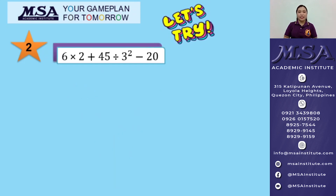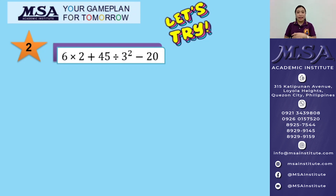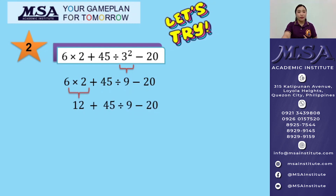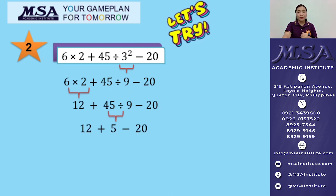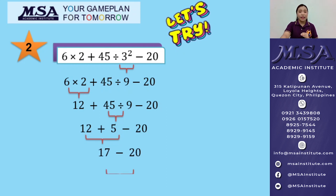Number 2: 6 times 2 plus 45 divided by 3 squared minus 20. Here we don't have any grouping symbol, so we start with the exponent: 3 squared equals 9. Next, multiply 6 and 2 to get 12, then divide 45 by 9 to get 5. Addition and subtraction from left to right: add 12 and 5 to get 17, then subtract 20. The final answer is negative 3.